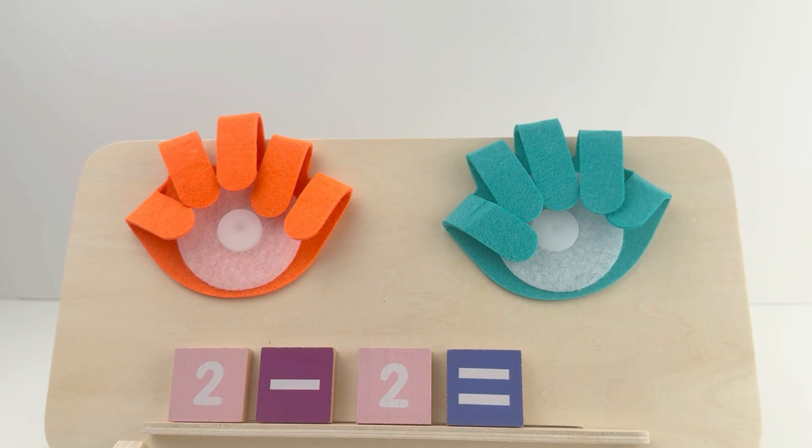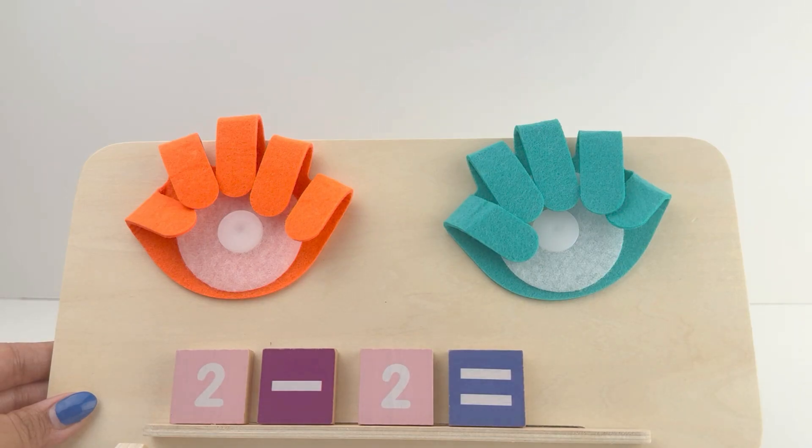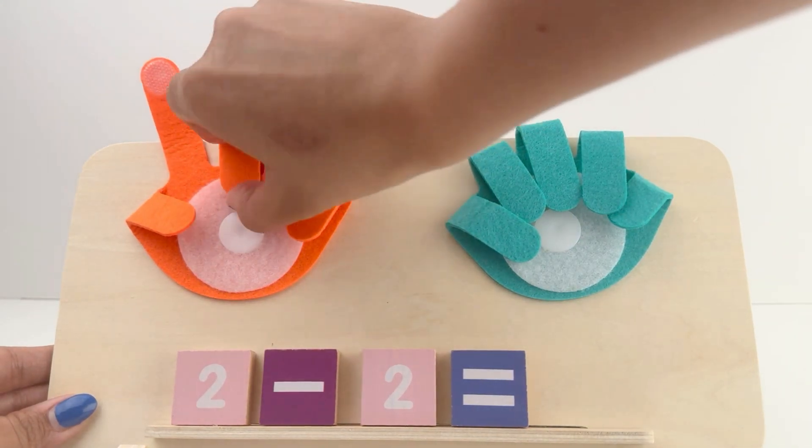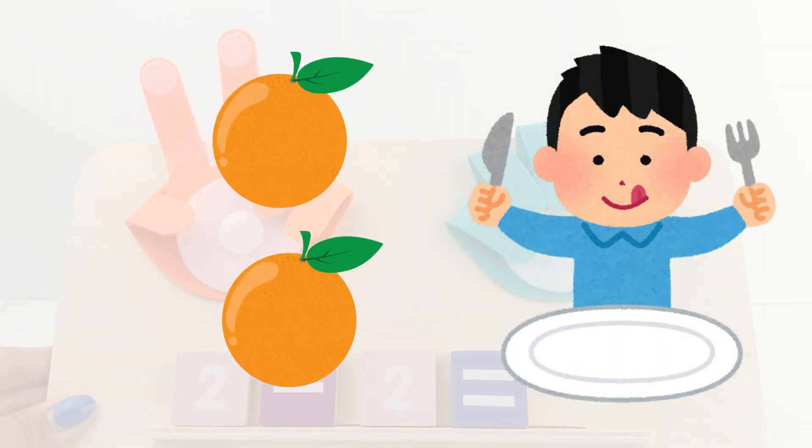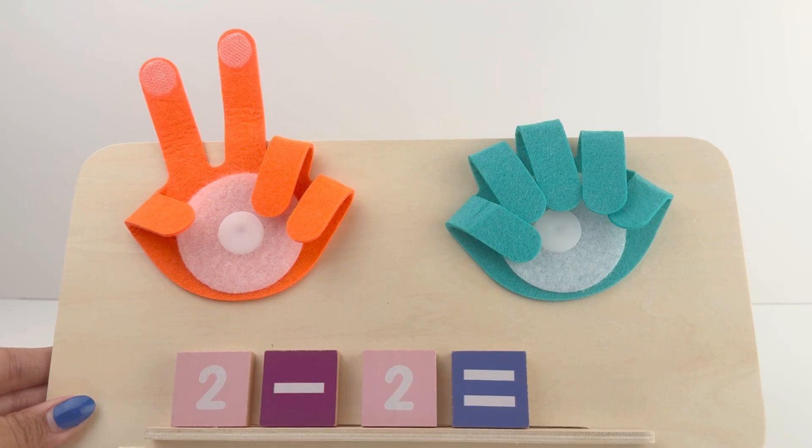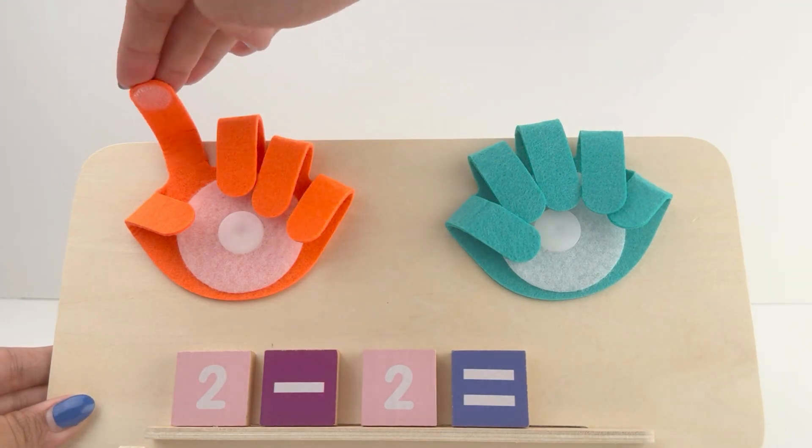Let's do it on our hands. Let's imagine you had 2 oranges. Let's open 2 fingers on your hand. 1 and 2. And out of those 2 oranges, you ate 2. Let's close 2 fingers. 1 and 2.